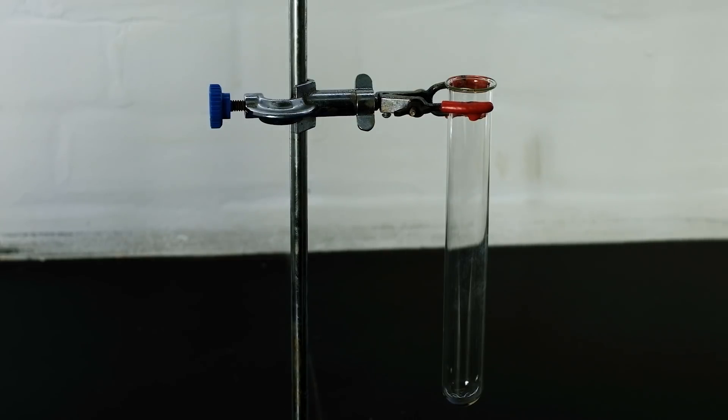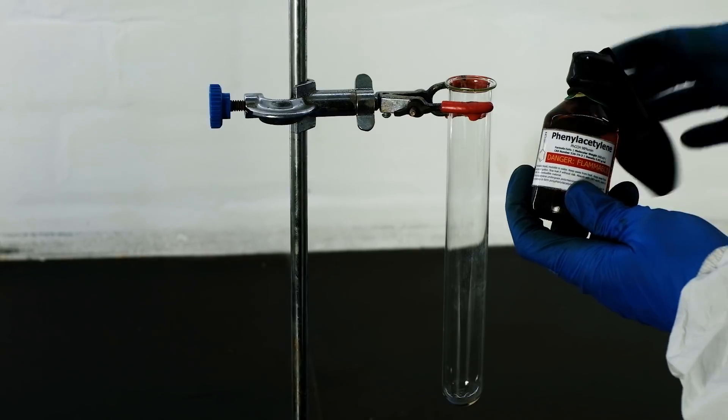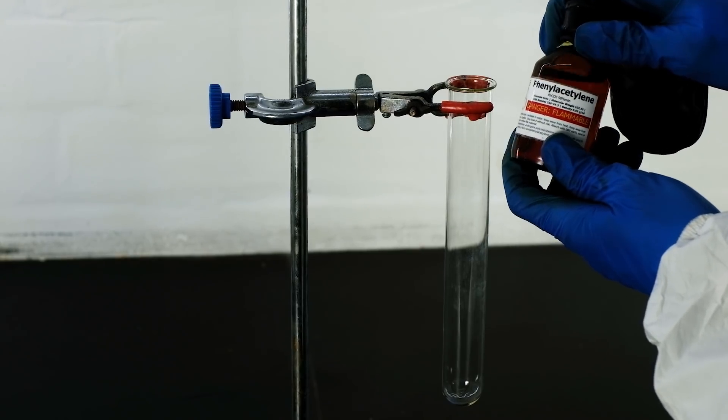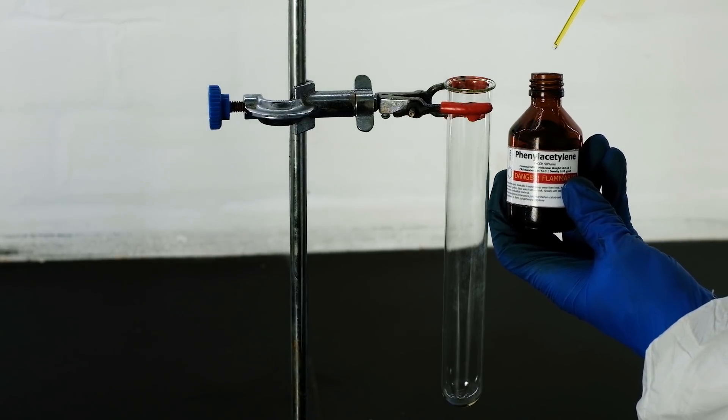In this experiment, we will chlorinate phenylacetylene. Phenylacetylene has an unsaturated bond and like other alkynes, can be chlorinated. Phenylacetylene is a very stinking volatile liquid, so to store it in the lab, an additional cap is sometimes put on.